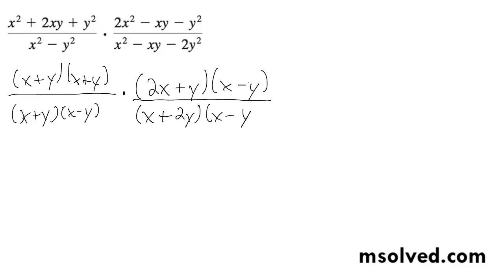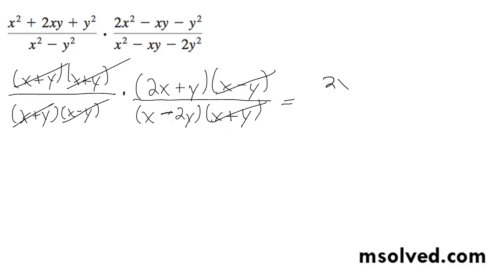Oops, wrong, wrong. Well, hold on. Minus, plus. All right. So the x minus y's cancel out, and x plus y cancels out, and this x plus y cancels out. And you are left simply with 2x plus y over x minus 2y.